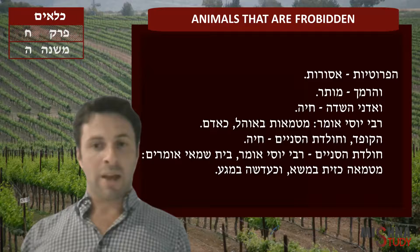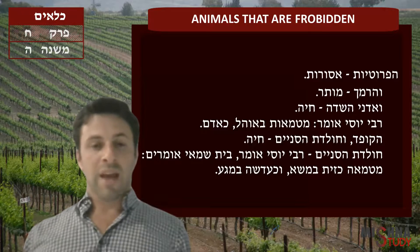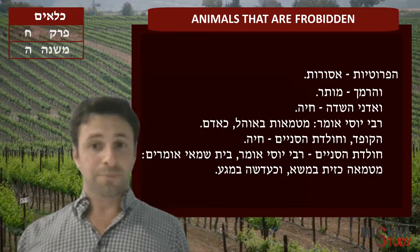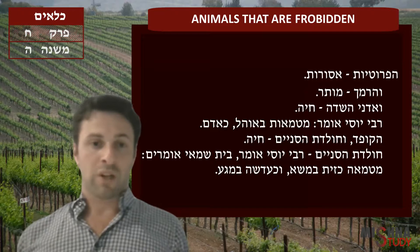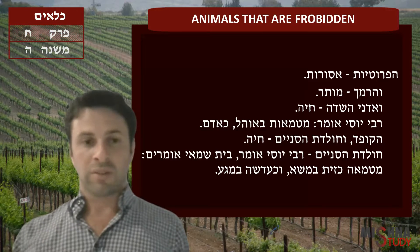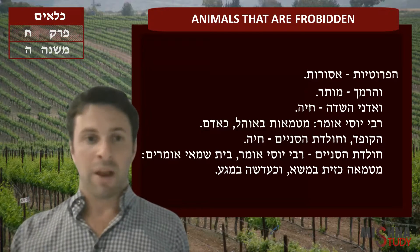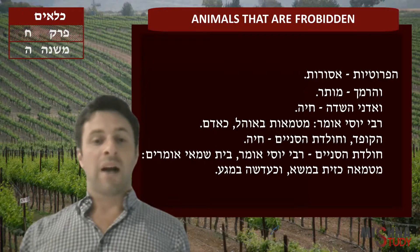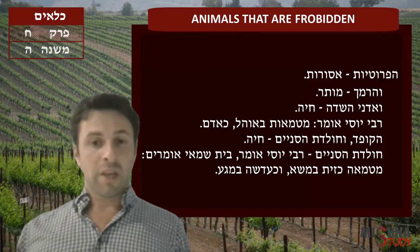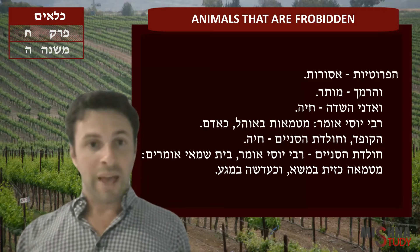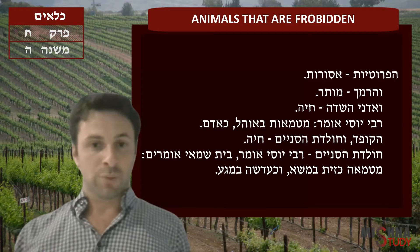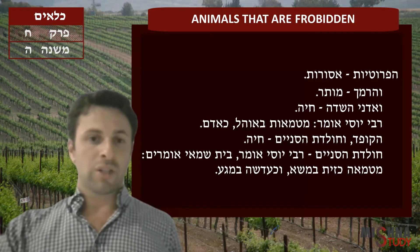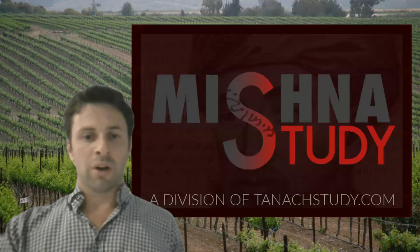Rabbi Yoseh is saying that according to Bet-Shamayi, he's taking both humrot. He says that this chudat tsenayim is going to be tamei kazayit b'masa — treating it like a nevelah, like a dead animal such as a dead bear or dead lion. And ka'adasha b'maga — also if you touch it and only touch the size of a lentil, it doesn't have to be the size of a kazayit. That's the humrah of the shemona shiratzim — you become tamei once you touch it. Halacha is not like Rabbi Yoseh in either of these statements.